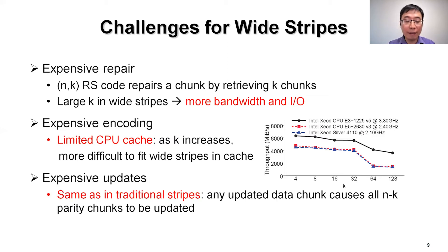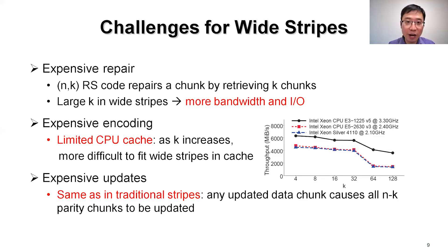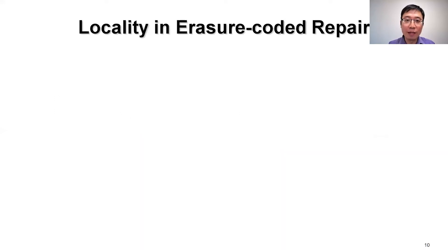The third challenge is the expensive update — an updated data chunk will cause all the parity chunks to be updated. For the first challenge, which is the major one, many existing studies use locality for fast repair.